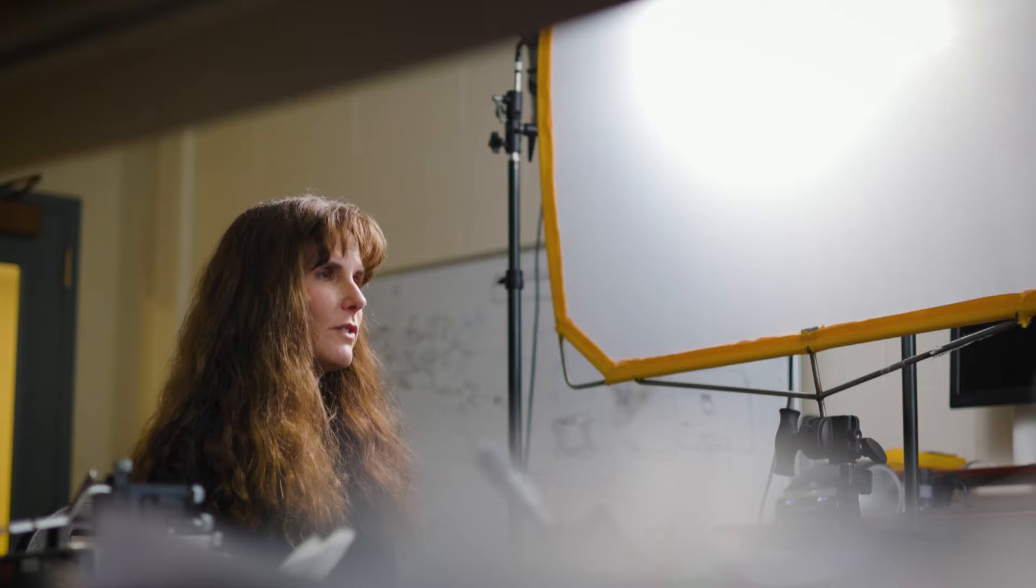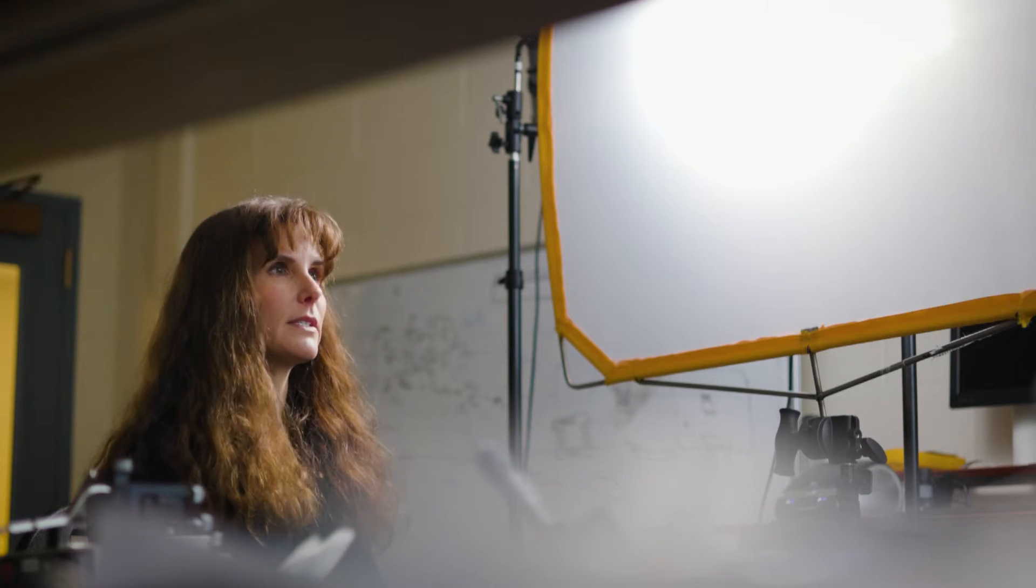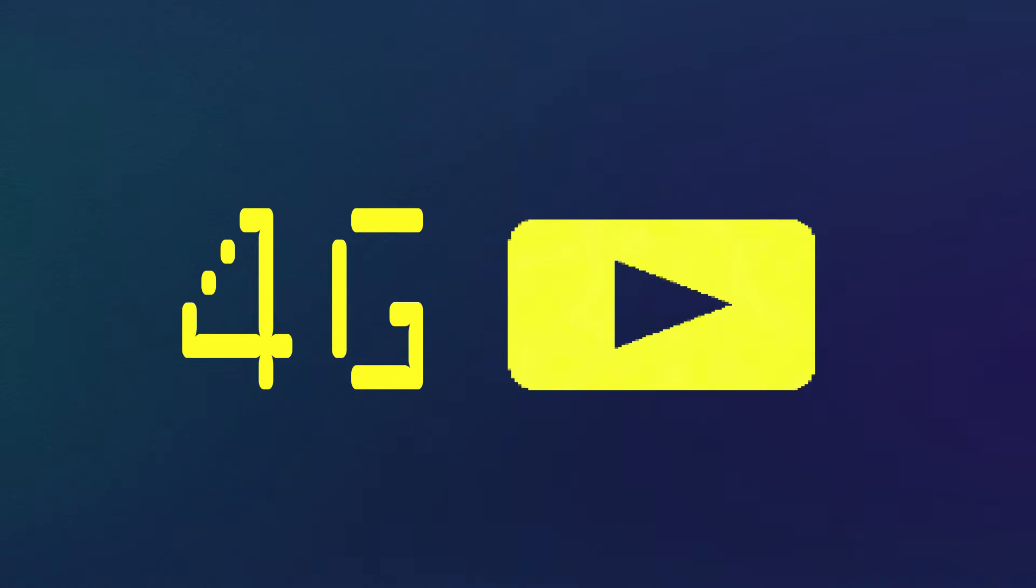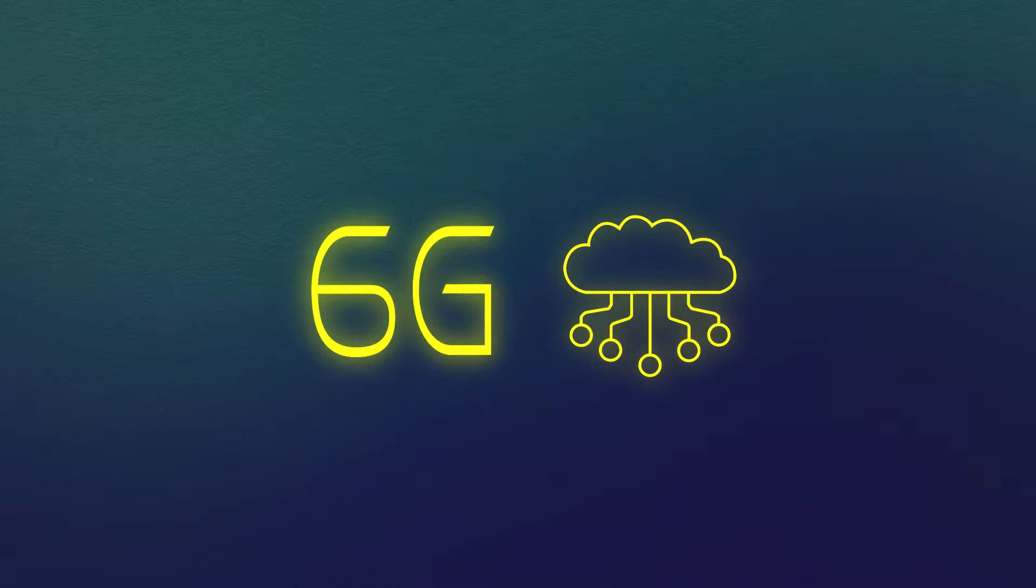What each of these generations effectively means is an increase in data rates, an increase in bandwidth that is available. So 3G was a revolution because it opened up GPS, 4G was video, 5G was Internet of Things and edge computing, and now 6G is about AI. So what does that mean? That means we need 10 to 100 times more data, faster data, in order to utilize the computational power of data centers.